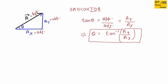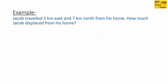Let's take an example. Here we have this question: Jacob traveled 5 kilometers east and 7 kilometers north. How much is Jacob displaced from his home? Let's draw a figure first. This side is east and this side is north. He traveled 5 kilometers east, then 7 kilometers north.